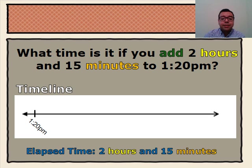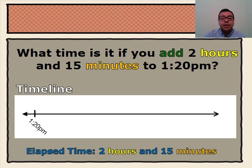What time is it if you add 2 hours and 15 minutes to 1:20 p.m.? On our timeline, we've already marked our start time, 1:20 p.m., and then we'll gradually add our elapsed time, our 2 hours and 15 minutes.